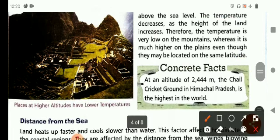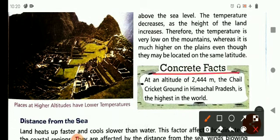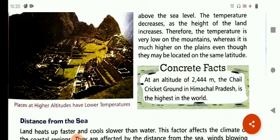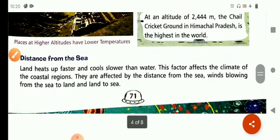Now one more important thing we should learn from our concrete fact. At an altitude of 2,444 meters, the Chail Cricket Ground in Himachal Pradesh is the highest in the world. This is the highest cricket ground in the world, located in Himachal Pradesh, and its height is 2,444 meters.